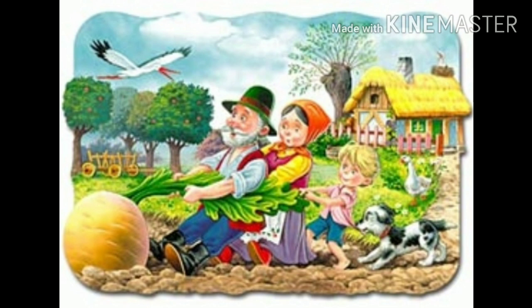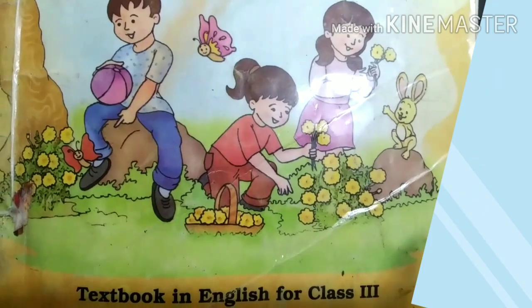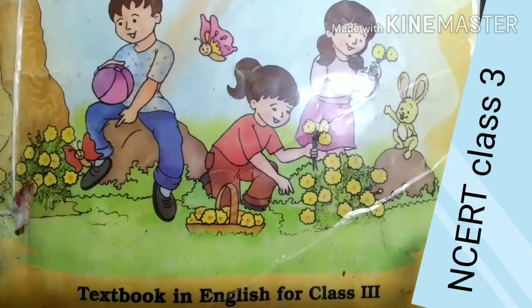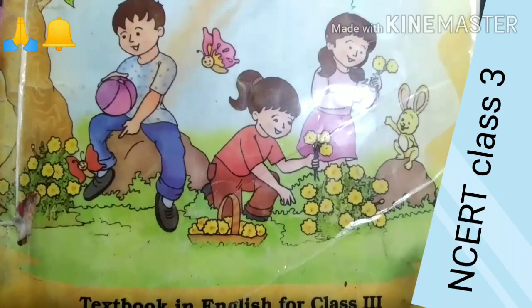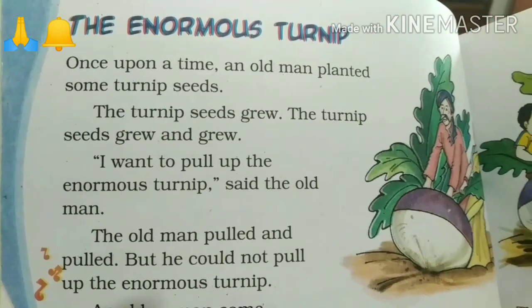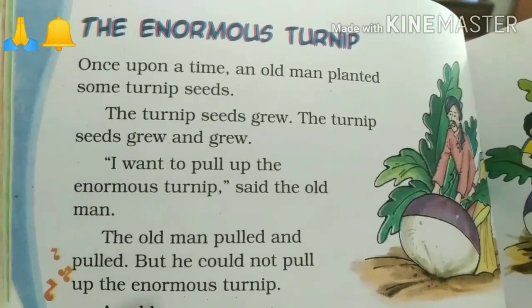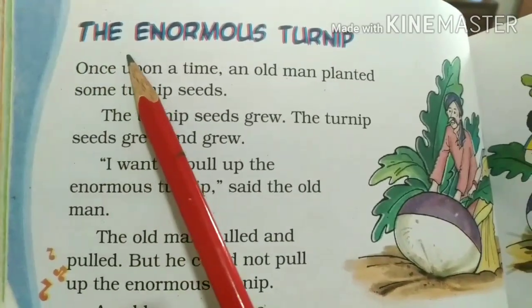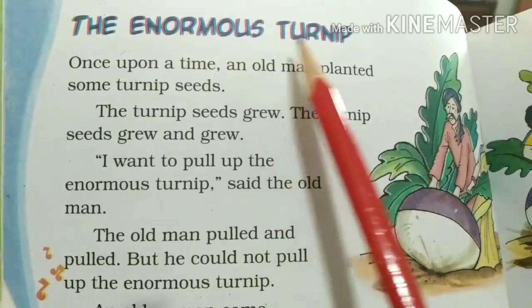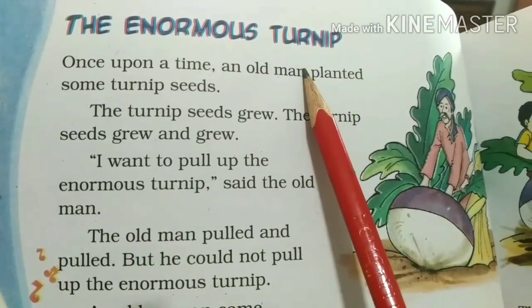So, without wasting time, let's get started. NCRT textbook in English for class 3, Unit 3: The Enormous Turnip.